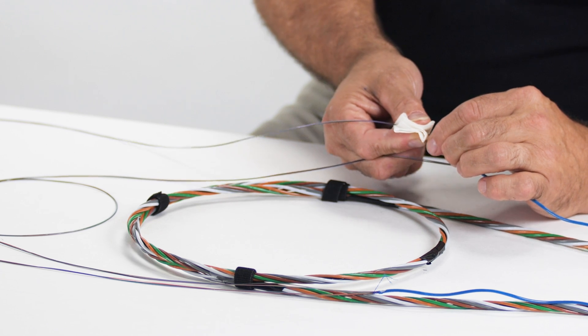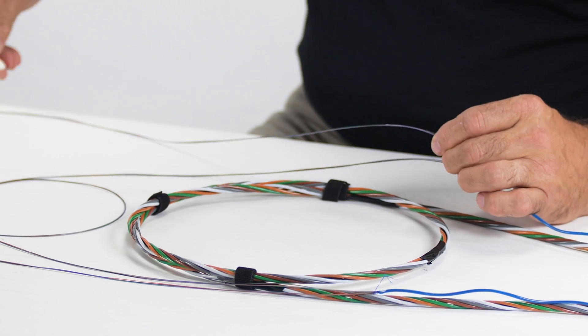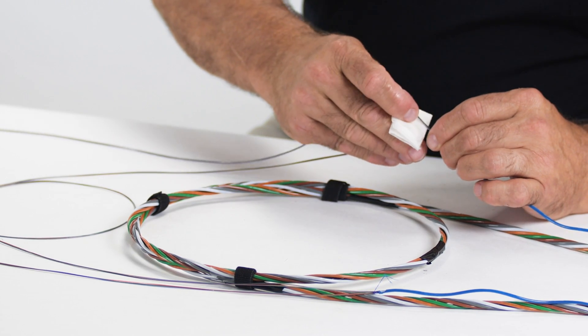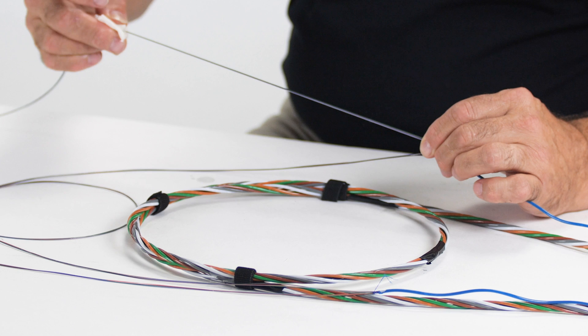Clean the fibers with an approved fiber cleaning solution. Use a Kim wipe to ensure that the fibers are dry and free of debris before installing them into the splice tray.